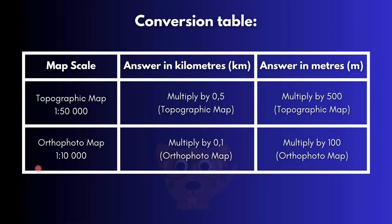There are two types of maps you will have in your paper. You have your topographic map, which has a scale of 1:50,000, and your autophoto map, which has a scale of 1:10,000. They could ask for your answer in kilometers — multiply by 0.5 for a topographic map or by 0.1 for an autophoto map. For meters, multiply by 500 for a topographic map or by 100 for an autophoto map.